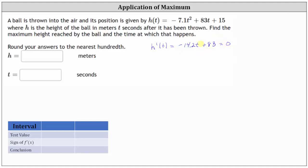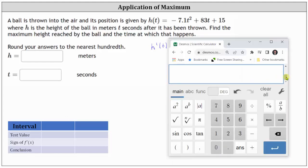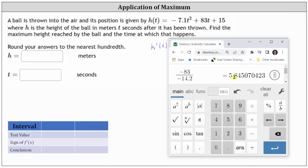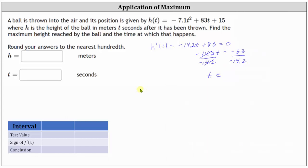First, we subtract 83 on both sides, and then divide both sides by negative 14.2. Now we'll use the calculator to round t to the nearest hundredth. 83 divided by negative 14.2 is approximately 5.85. So this would be 5.85 seconds.